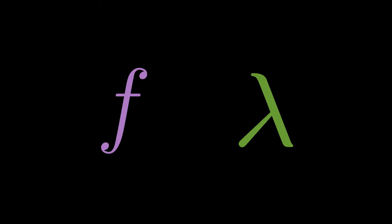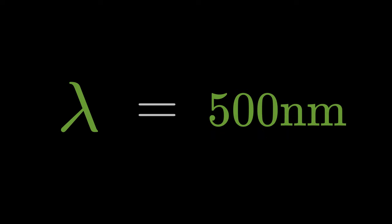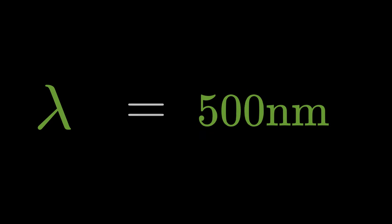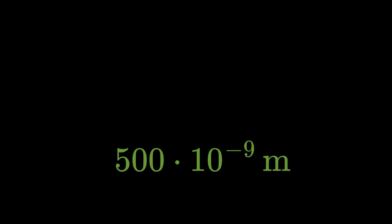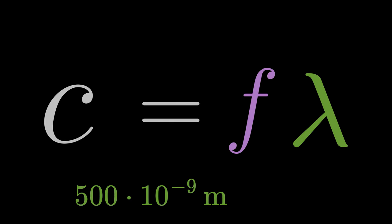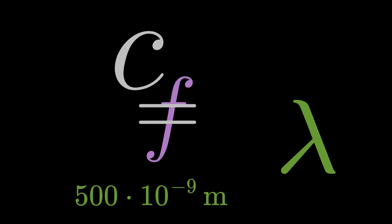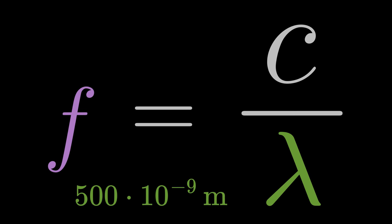Let's do a simple example of how to convert the two quantities into each other. From the operating instructions for the laser pointer, you have determined that the light emitted by the laser pointer has a wavelength of 500 nanometers. Nano stands for 10 to the power of minus 9. Let's rearrange the dispersion relation with respect to the frequency.